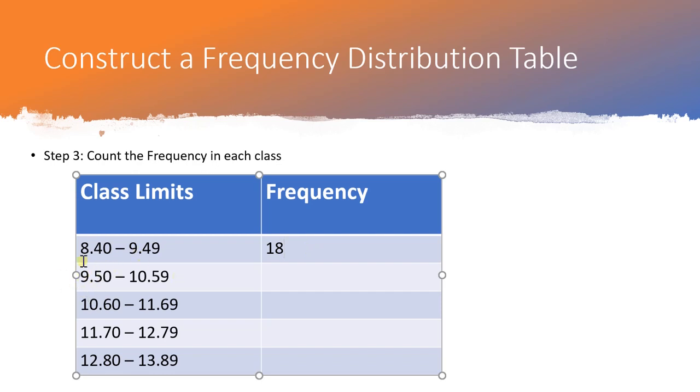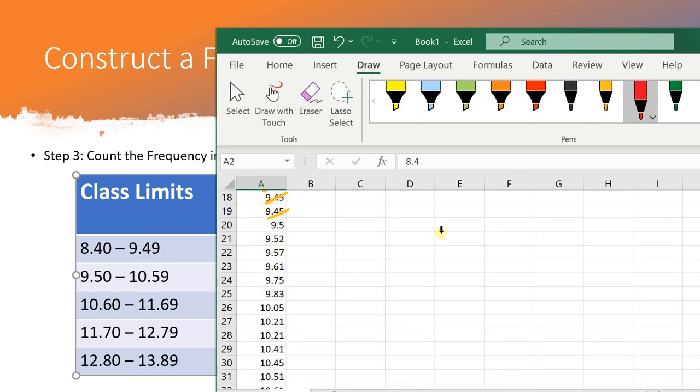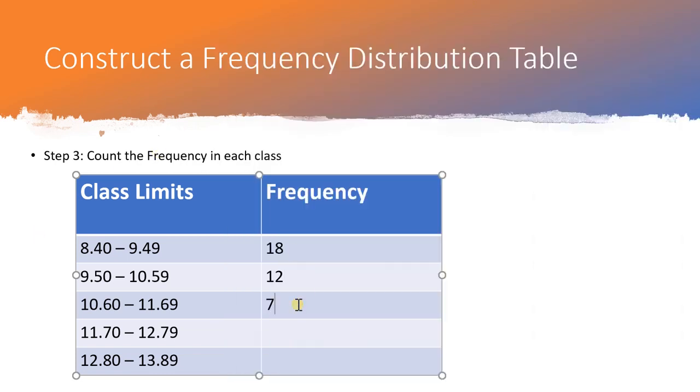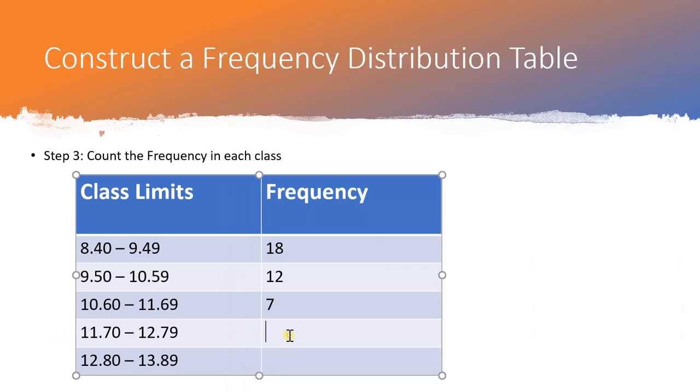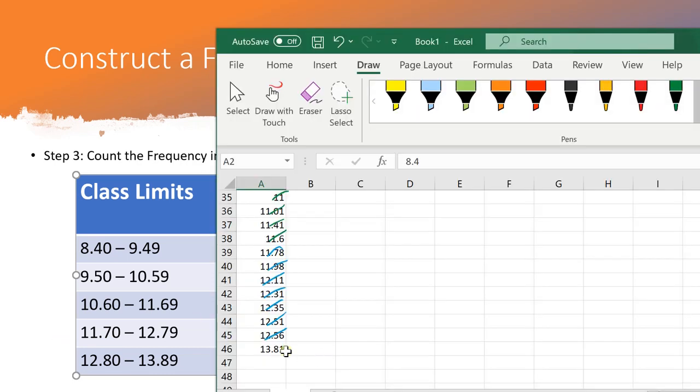So now how many observations are between 9.50 and 10.59? Go back to my Excel data. Counting all the way until I get to 10.59. 1, 2, 3, 4, 5, 6, 7, 8, 9, 10, 11, 12. Okay, 12 observations in that second class. Now I'm looking until I get to 11.69. 1, 2, 3, 4, 5, 6, 7. Just 7 observations in that next class. Now I'm counting until I get to 12.79. 1, 2, 3, 4, 5, 6, 7. 7 observations there. And lastly, in the last class, looks like I have just one observation.